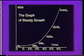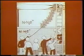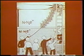Let's look at a generic graph of something growing steadily. After one doubling time the quantity is twice its initial size, after two it's four times, then 8, 16, 32, 64, 128, 256, 512 — and in just 10 doubling times it's 1,024 times its initial size. If you try to make a graph of that on ordinary graph paper, the graph will go right through the ceiling.